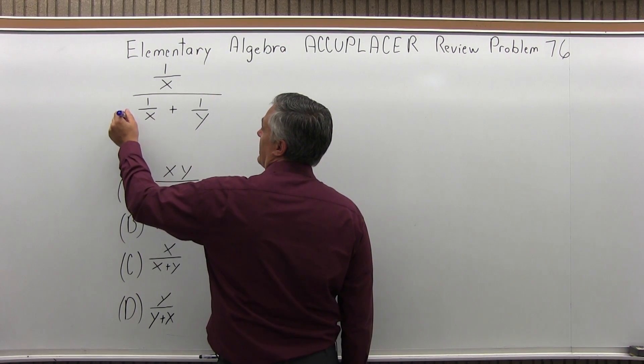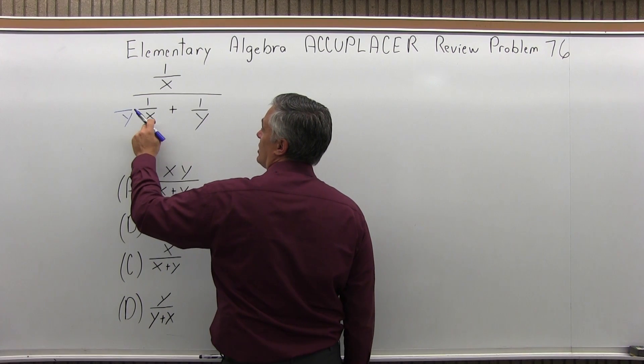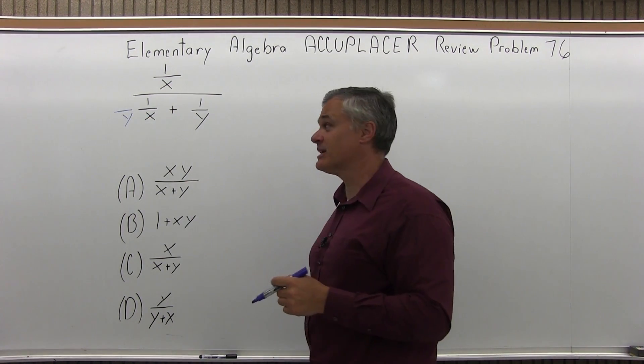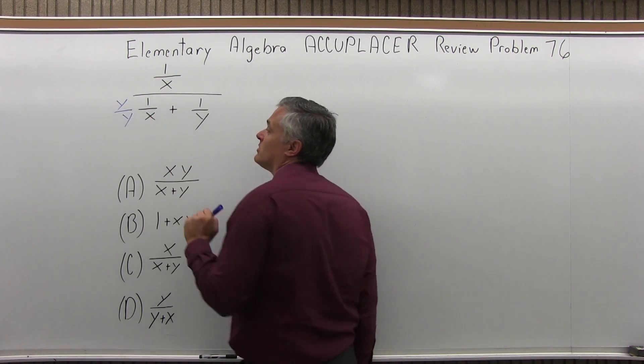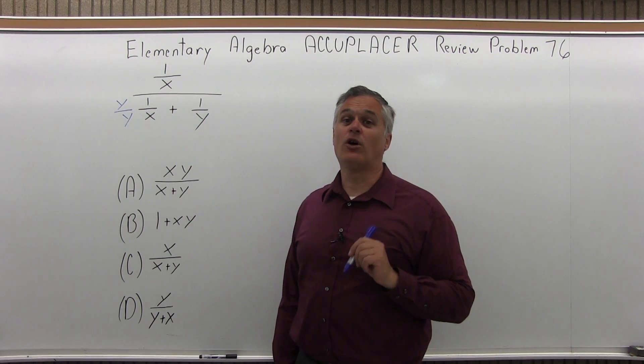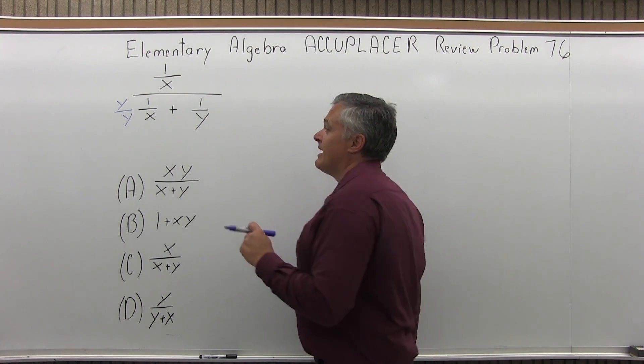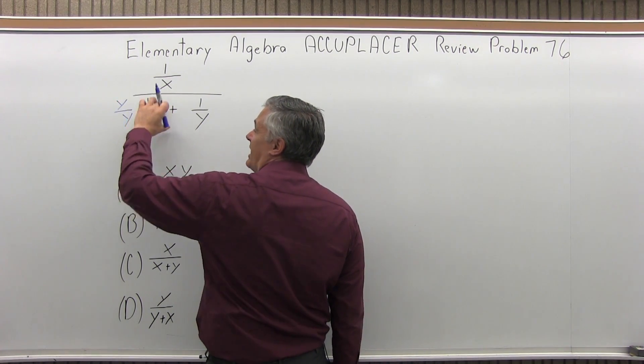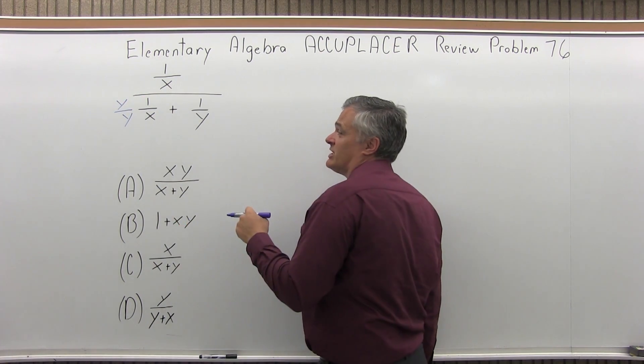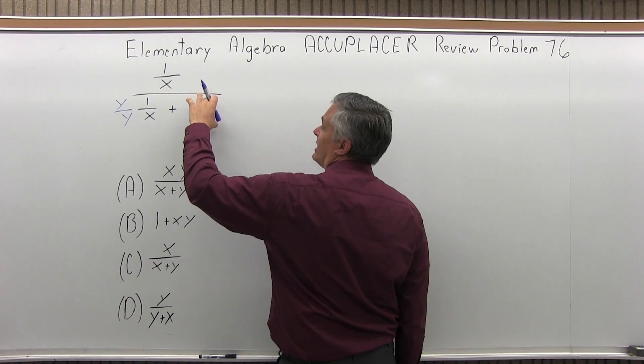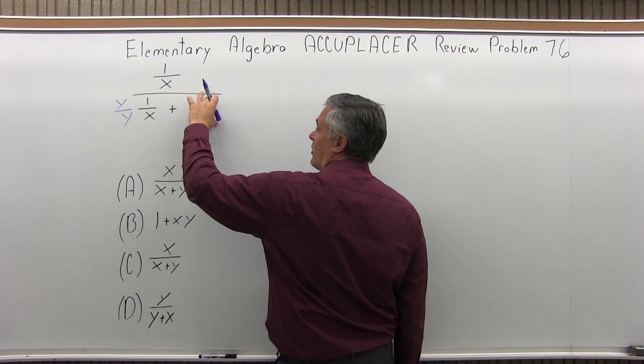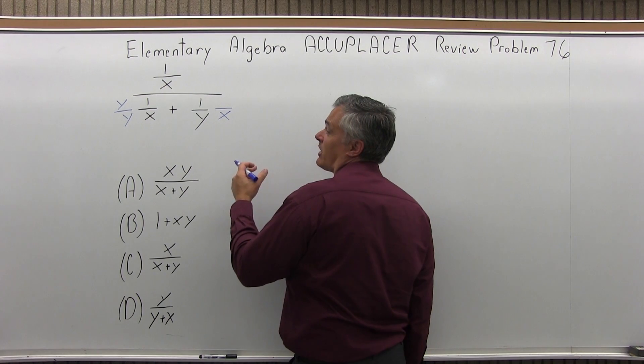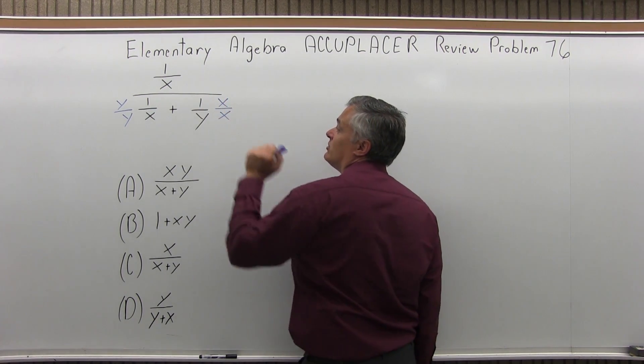To do that, I'm going to multiply the first denominator, the x, times y. If I multiply y times x, I'll get an xy, but if I multiply the denominator times y, I have to multiply the numerator also times y. So I'm really just multiplying times y over y, which is really just multiplying times one.